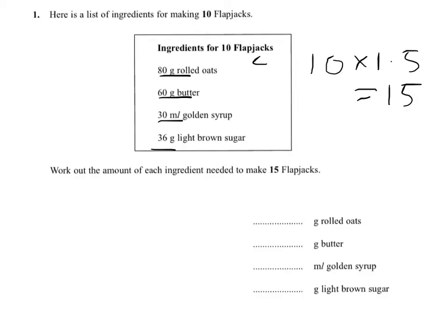So half of 80 is 40. Half of 60 is 30. Half of 30 is 15. And half of 36 is 18. So you know what you need for 10, you know what you need for the extra 5. So I'll put the 10 there and the 5 there.